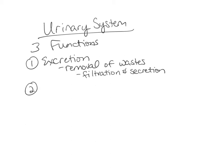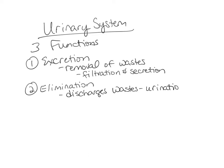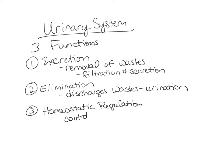The second function of the urinary system is elimination. After the kidneys excrete these waste products, through elimination the urinary system discharges them from the body. This process is called urination. The third function of the urinary system is homeostatic regulation. This is probably the biggest function of all. With homeostatic regulation, it controls the volume and the solute concentration of the blood.